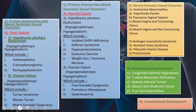Normal secondary sexual characteristics are divided into anatomical abnormalities — imperforate hymen, transverse vaginal septum, absent vagina with functioning uterus, and absent vagina with non-functioning uterus — and a second group including androgen insensitivity syndrome, resistant ovary syndrome, polycystic ovarian disease, and prolactinoma.